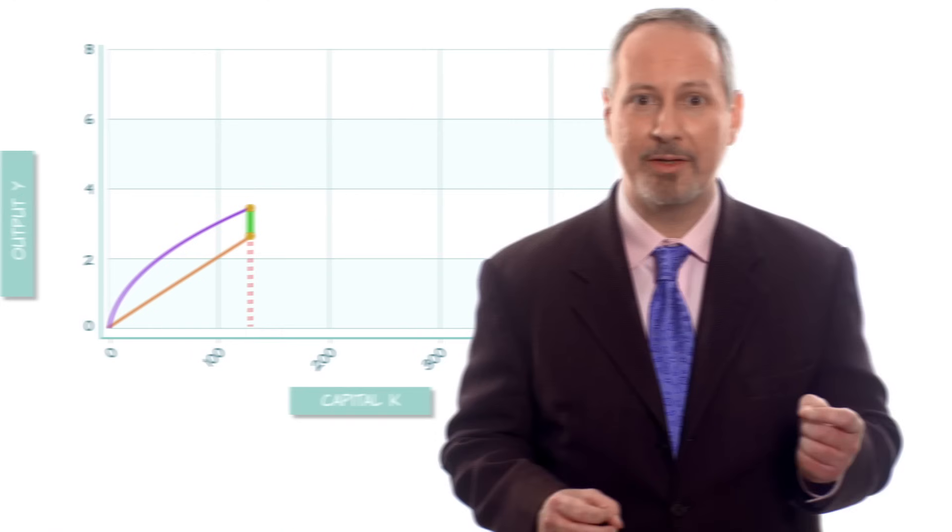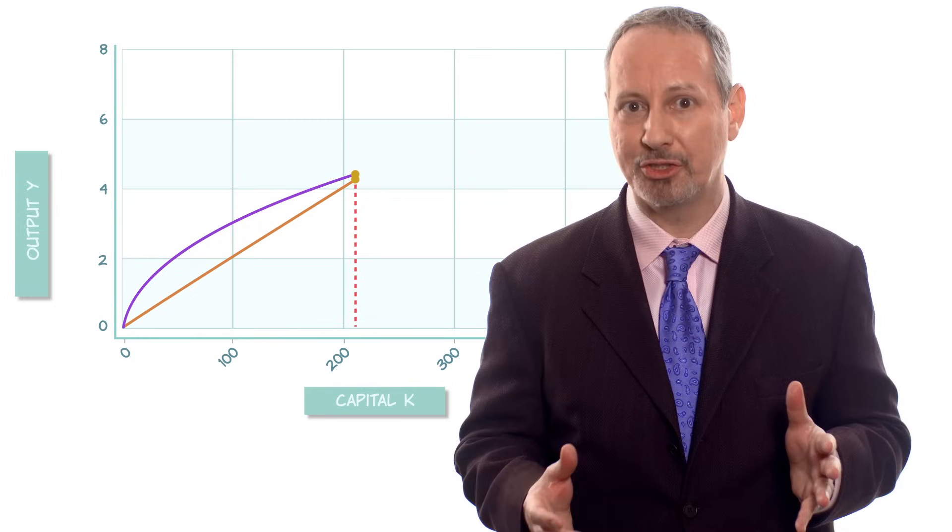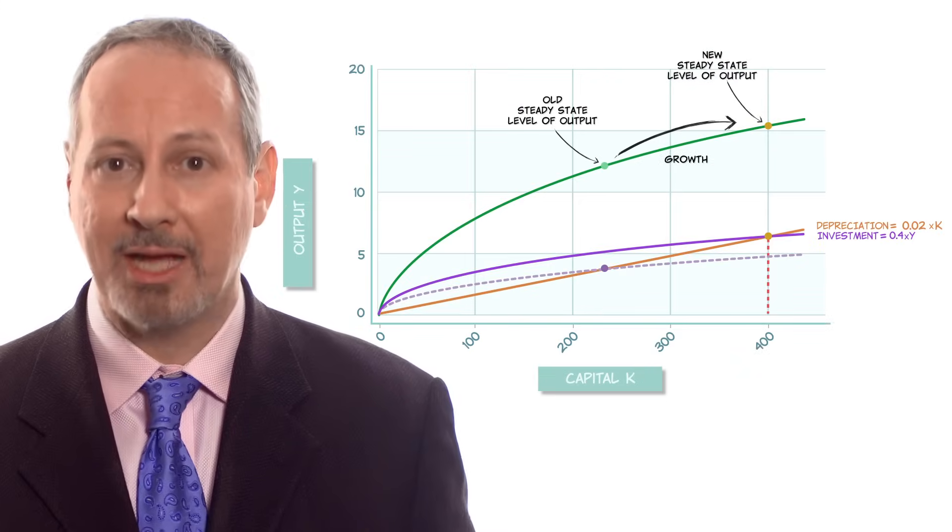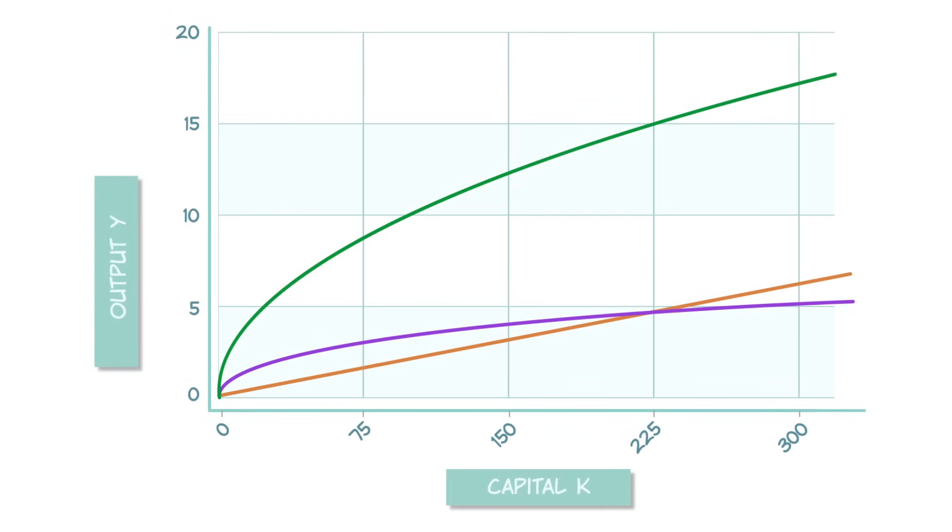We've covered a lot of the super simple Solow model. We've looked at the dynamics of capital accumulation, how changes in savings rates influence growth, and we've looked at some of the predictions of the Solow model. One thing we've learned is that the model seems to inevitably predict that we end up in a steady state with no growth.